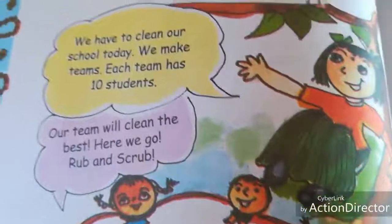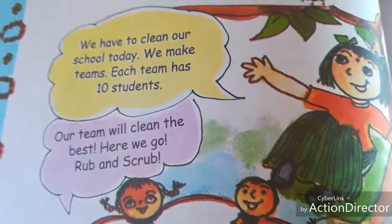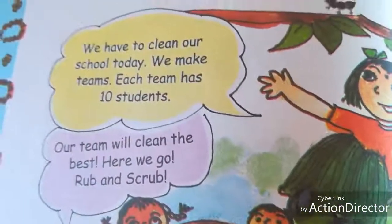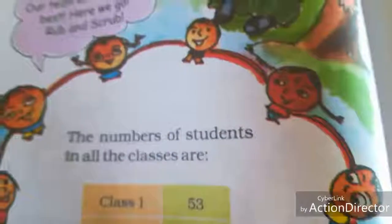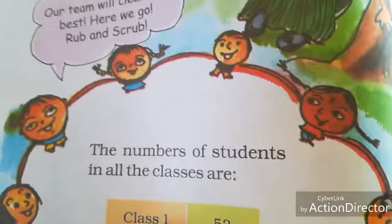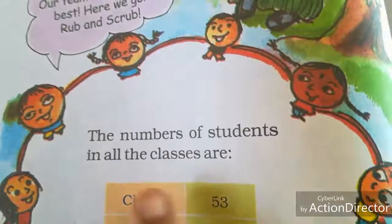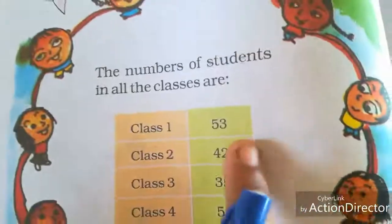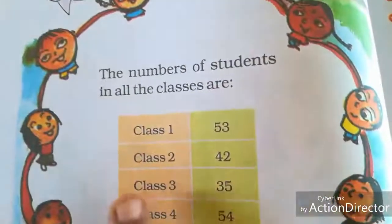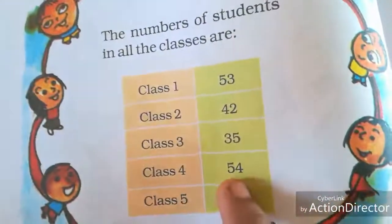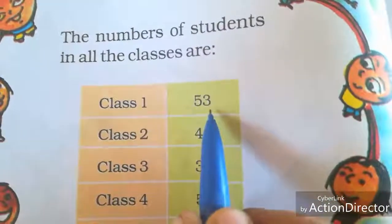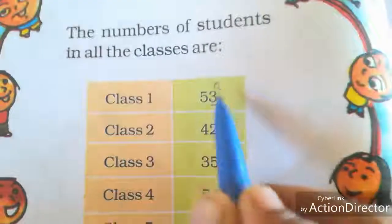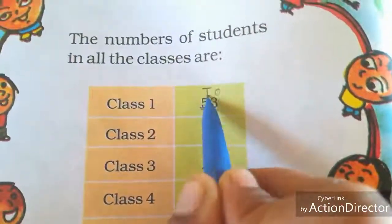Another girl said: our team will clean the best. Here we go — a rub and a scrub. They are going to give their best. The number of students in all the classes are: class 1 has 53, class 2 has 42, class 3 has 35, class 4 has 54, and class 5 has 26 students. The right digit indicates the 1s and the left digit indicates the 10s.